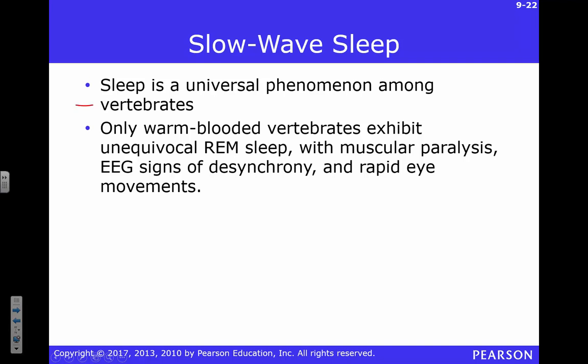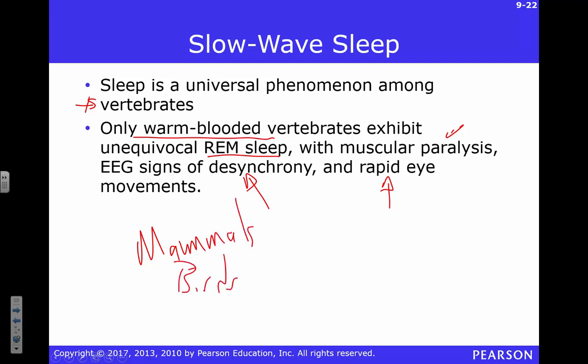All vertebrates sleep. If you have a dog, fish, or turtle — it sleeps. Interestingly, only warm-blooded vertebrates actually have REM sleep, including that muscle paralysis, EEG desynchronization, and rapid eye movements. So your turtle doesn't have REM sleep because it's cold-blooded. REM sleep is found in mammals and birds — warm-blooded vertebrates.